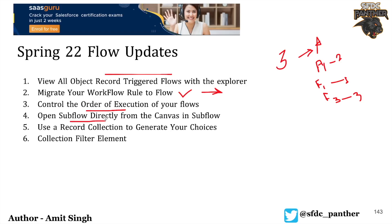Now you can open your sub-flow directly from the canvas in the sub-flow reference — we will see that in the demo. You can also create a record collection to generate your choices. For example, if you have a list of products and want to display them as radio buttons instead of a picklist, you can use a record collection variable and the choice will be created automatically.